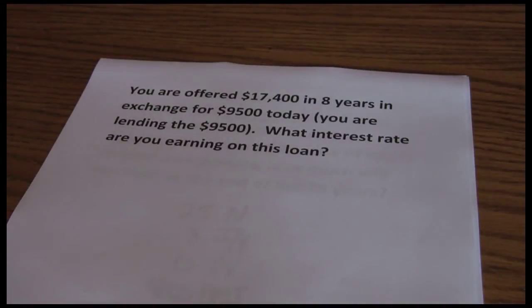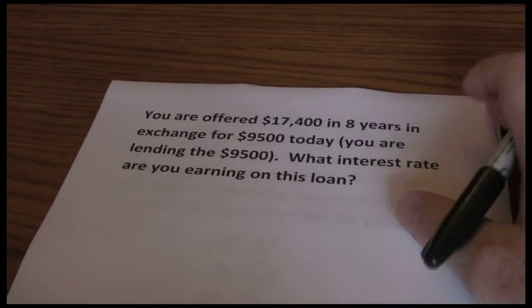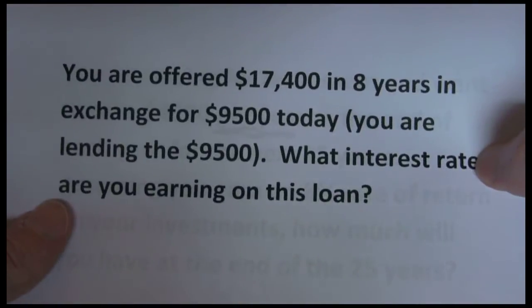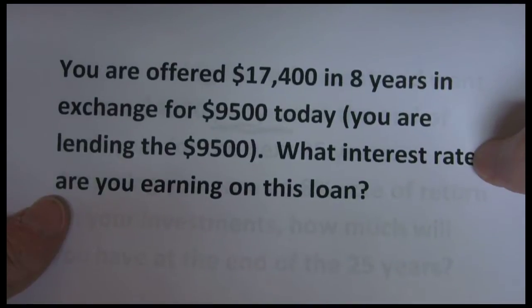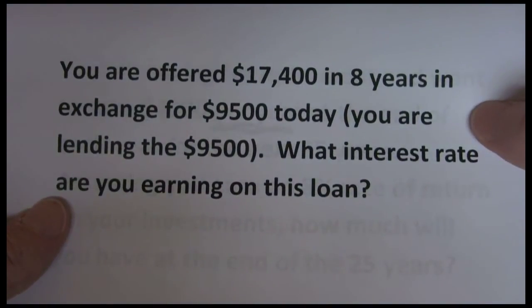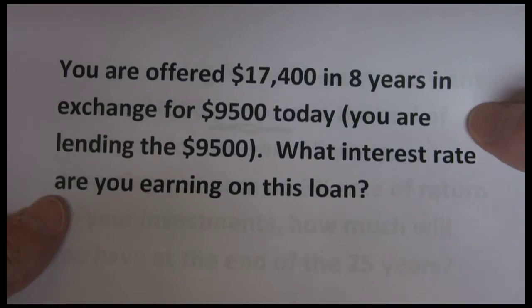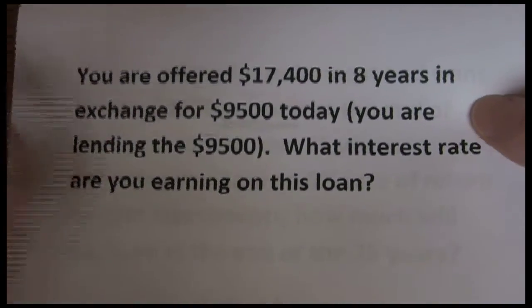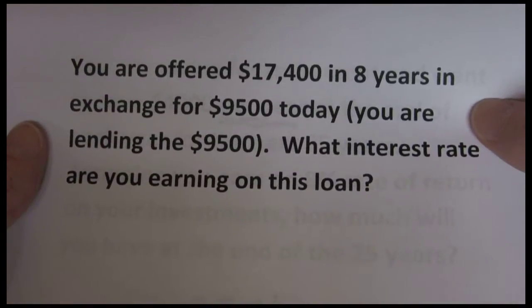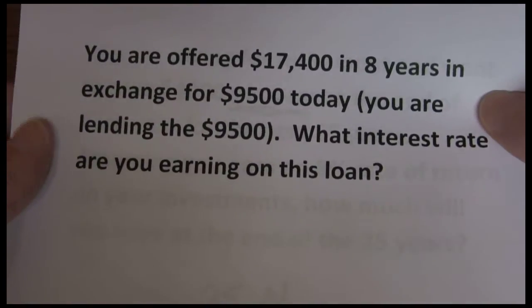In this last example with the five-key approach, I'm going to be solving for an interest rate on a loan. I'm offered seventeen thousand four hundred dollars in eight years in exchange for ninety-five hundred today. So I'm lending ninety-five hundred today — that's a cash outflow — and eight years from now I'm going to receive back seventeen thousand four hundred, which will be a cash inflow.